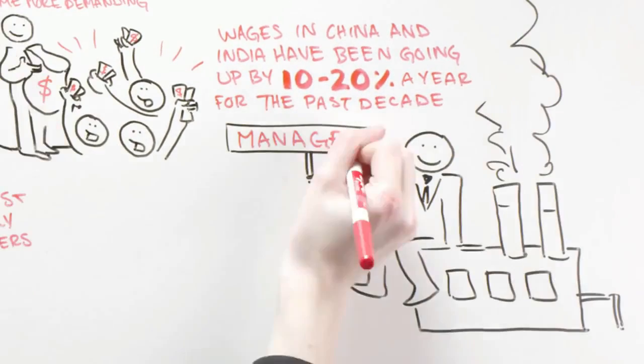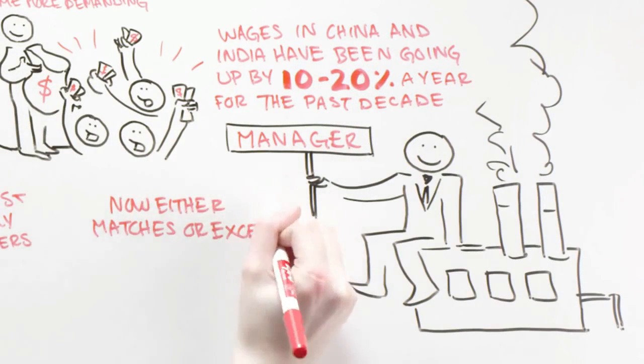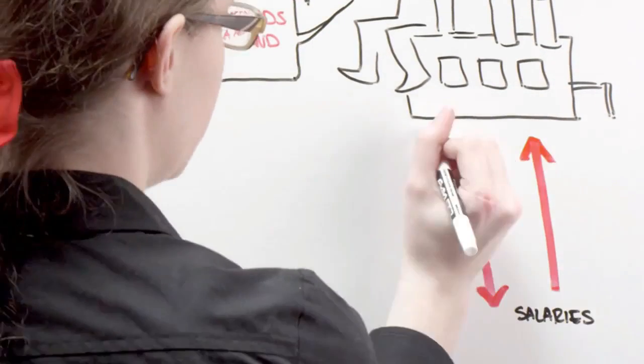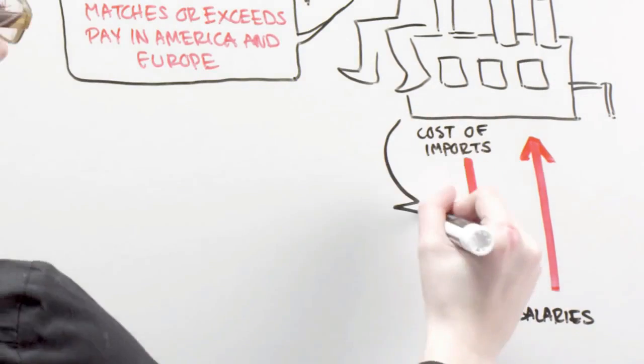and compensation for senior Chinese managers now either matches or exceeds pay in America and Europe. Rising salaries, plus the cost of transporting goods to the U.S. market, have pushed some companies to re-shore some of their production in America.